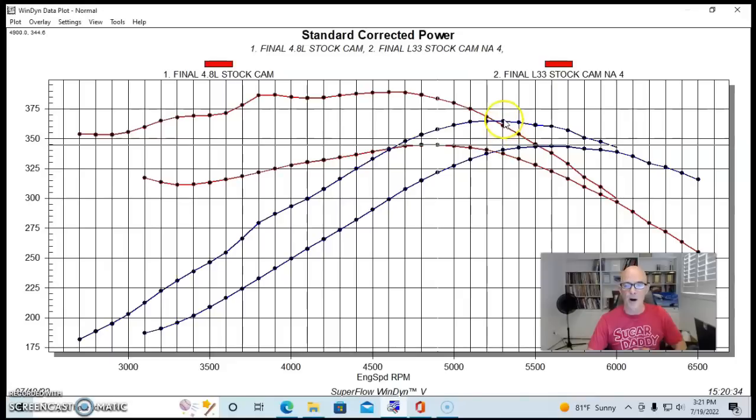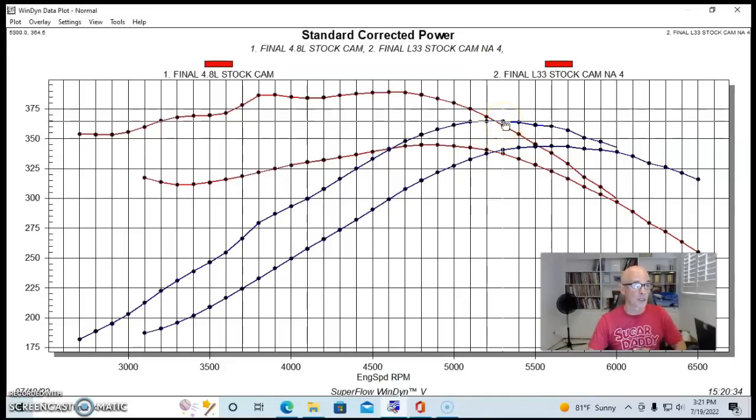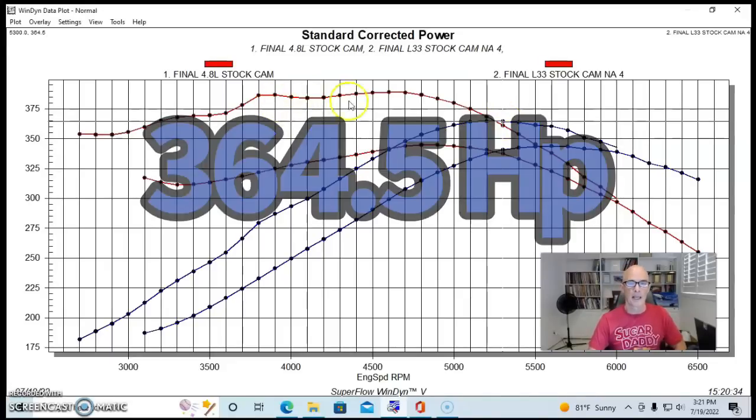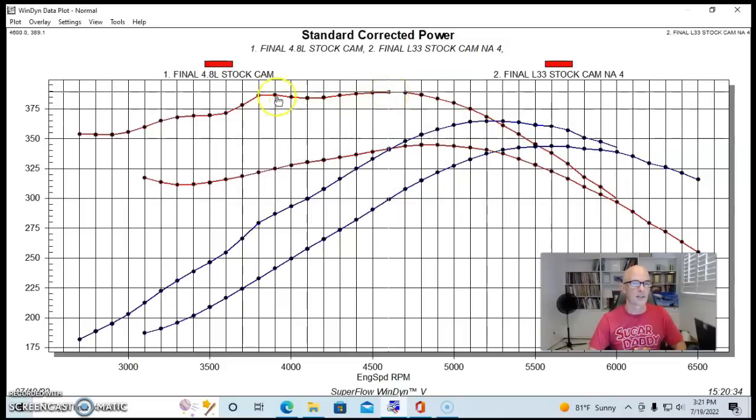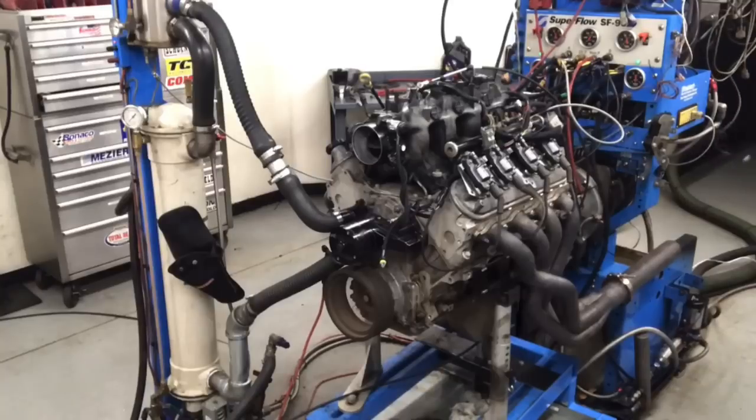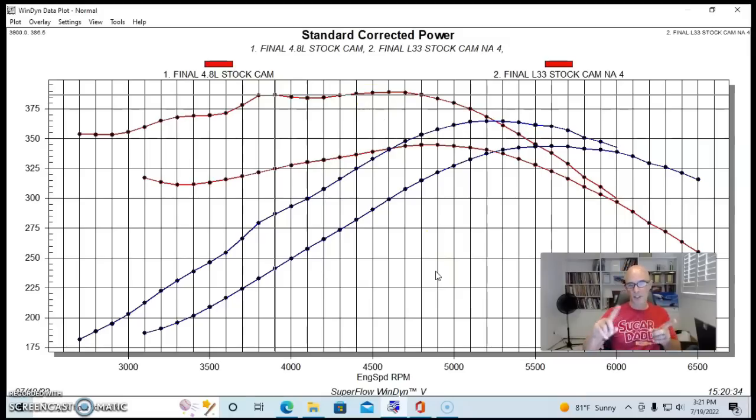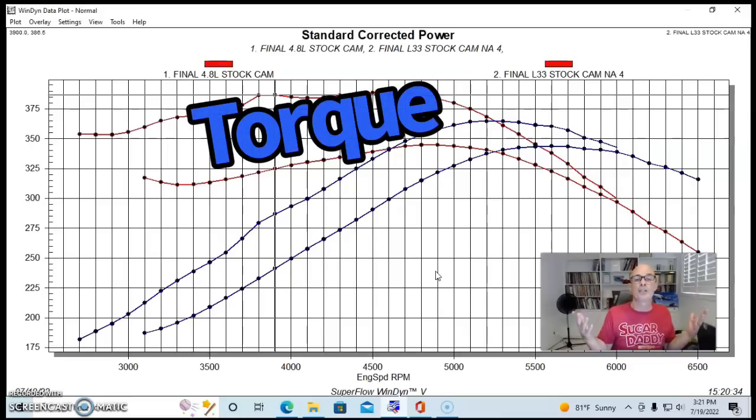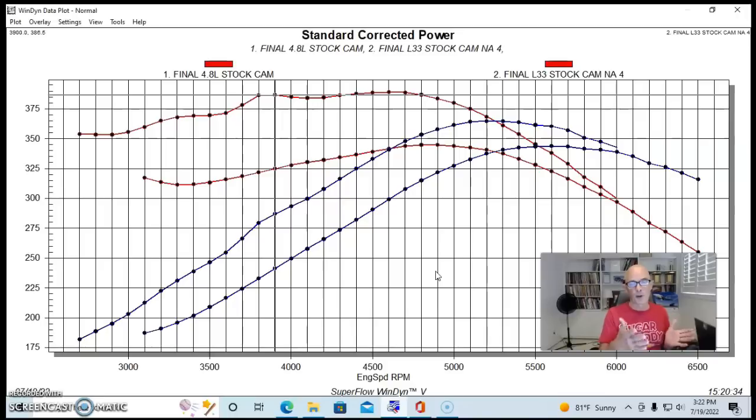Our otherwise stock L33 produced 364.5 horsepower and peak torque checked in at 389 foot-pounds of torque. What I want you to look at on this graph is something very important. If you look at the power curve from 5500 and below, there are huge gains in torque from the 5.3 over the 4.8.